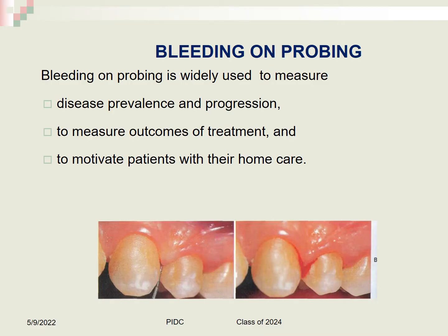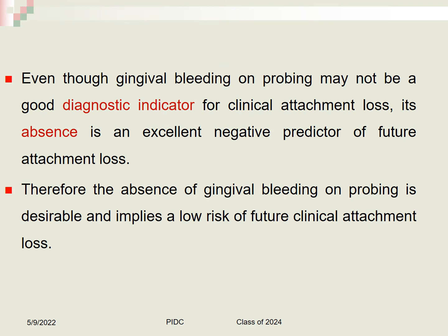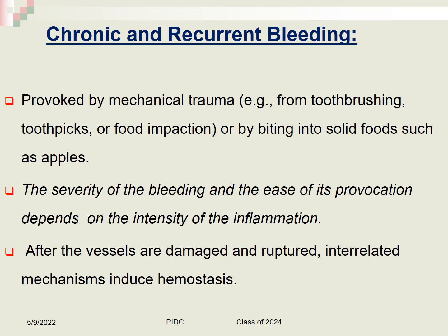Bleeding on probing is widely used to measure disease prevalence and progression, treatment outcomes, and to motivate patients. Gingival bleeding is an important diagnostic factor — the presence of plaque for only two days can initiate bleeding on probing, whereas once established it may take seven days or more of plaque control to eliminate it. The absence of gingival bleeding on probing is an excellent negative predictor of future attachment loss and implies low risk of future clinical attachment loss.